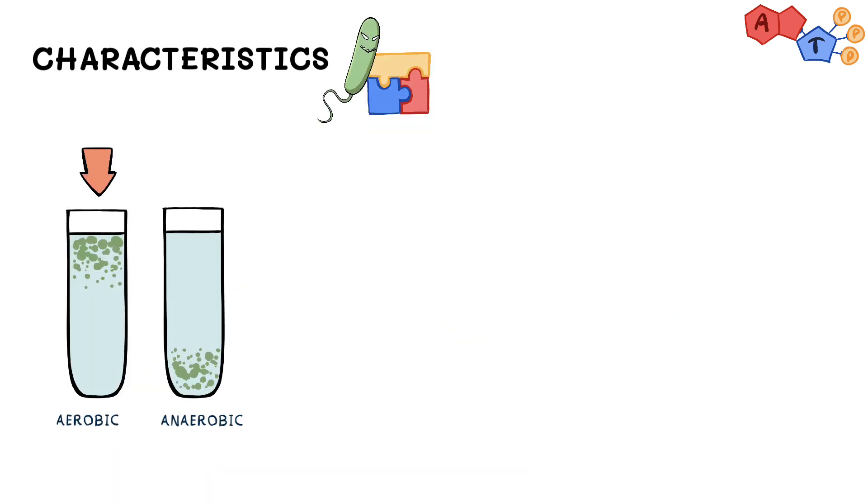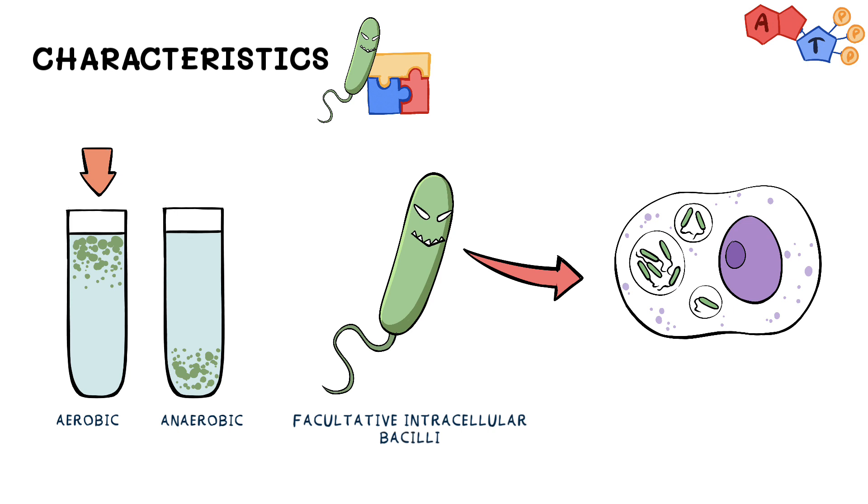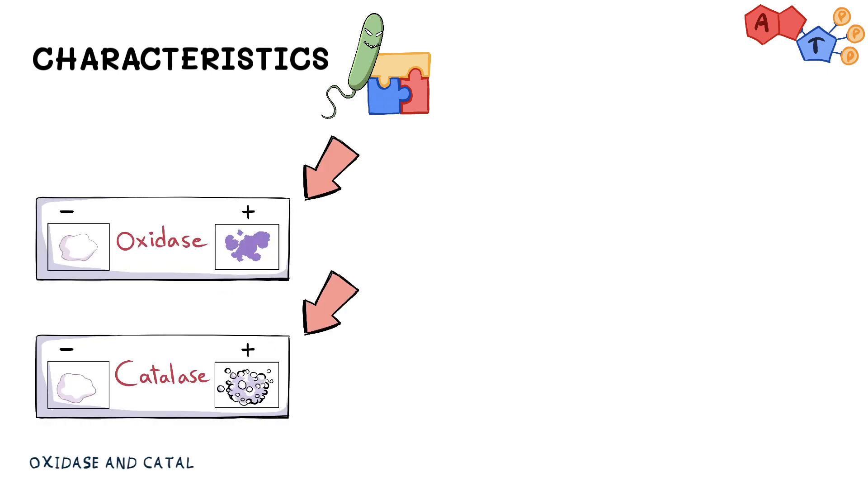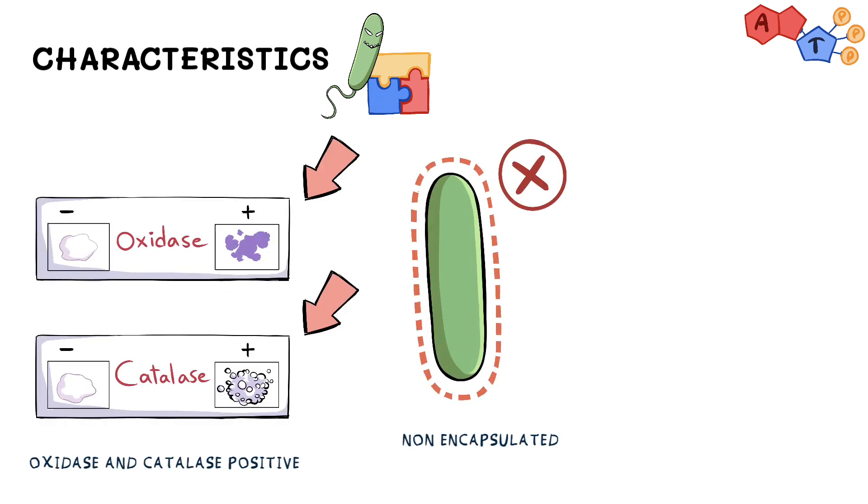Legionella is an aerobic facultative intracellular bacilli. Facultative intracellular, if you remember, means it can grow inside and outside the host cells. Legionella pneumophila is also oxidase and catalase positive, non-encapsulated so it doesn't have a capsule, and has a monopolar flagellum.